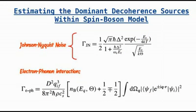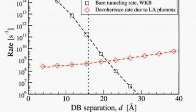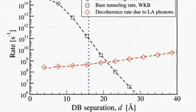We narrow down the two most important sources of decoherence as being the Johnson-Nyquist noise in the nearby electrodes and the phonons in the silicon crystal. These can be calculated for various dangling bond separations inside the qubit and we compare the results in a single graph with the coherent tunneling rates of the qubit.